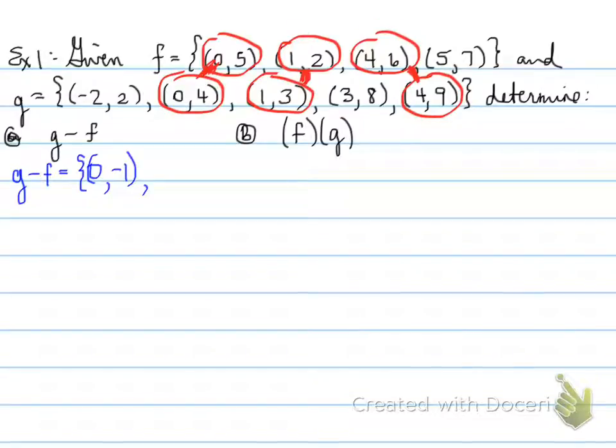Again, the next one, same x, and subtract the y's. 3 minus 2 is 1. Last one, 4, and then you have 9 minus 6, which is 3.